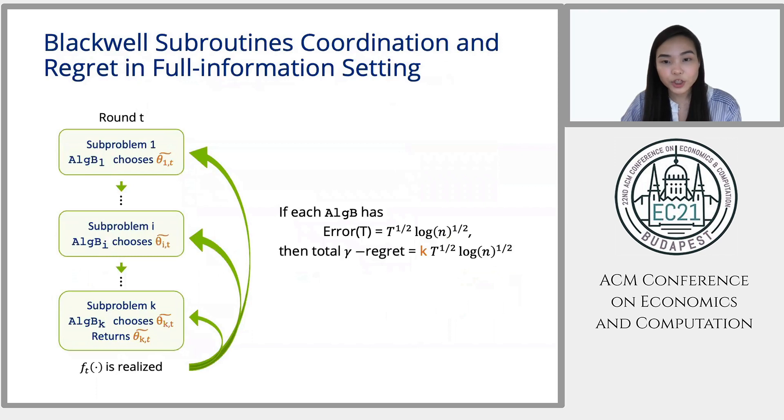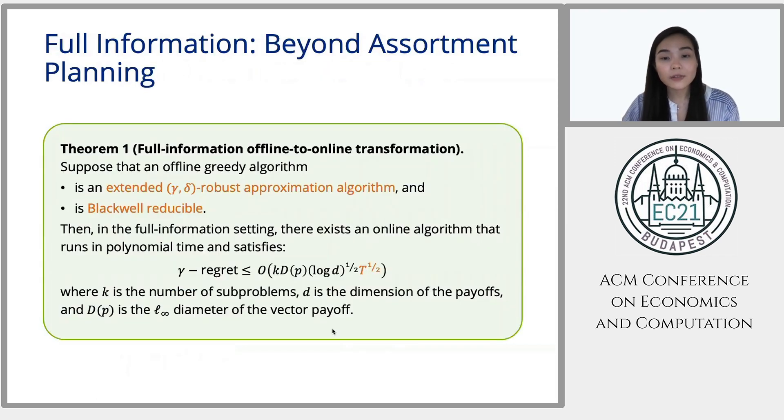And this is a more general version, which says that if an offline greedy algorithm is extended robust and Blackwell reducible, where Blackwell reducibility makes sure that each problem can be handled by replacing the greedy step with a Blackwell subroutine, then there exists an online algorithm that runs in polynomial time and gives a square root of t gamma regret.